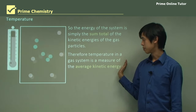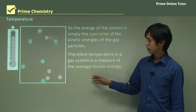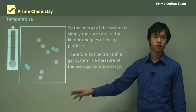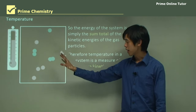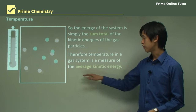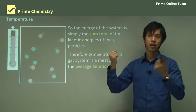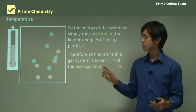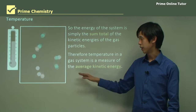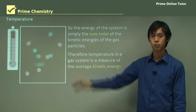Therefore, temperature in a gas system is a measure of the average kinetic energy of the particles. The temperature gives us an idea about the average speed of these particles. Remember that because each particle is traveling at random speeds and in random directions, we have to consider the temperature as the average, because collisions keep changing the speeds.